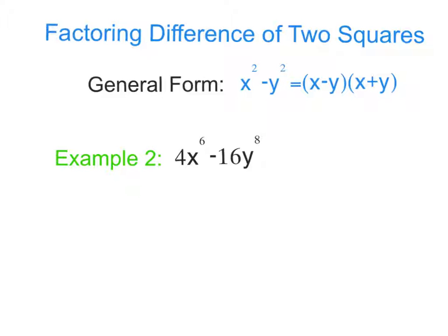Now, looking at our second example, we have a couple different things. First, we can take out a greatest common factor. We see 4 and 16, we can take out a 4, so we're going to do that first.